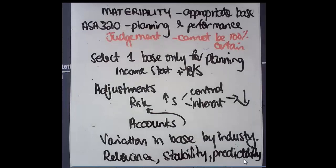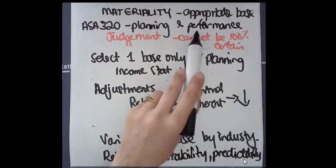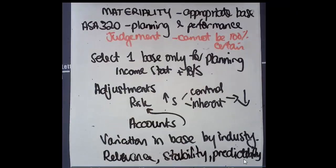In the Cloud Nine case, we selected turnover because the company was loss making for that year. But remember, it's also always open to adjustment. So the greater the risk of the client, perhaps the lower the risk will be at the planning stage, and then also the lower the materiality will be at your performance level as well.